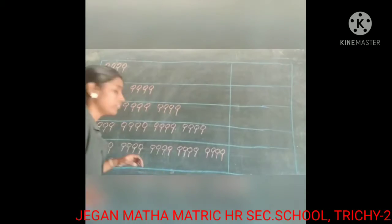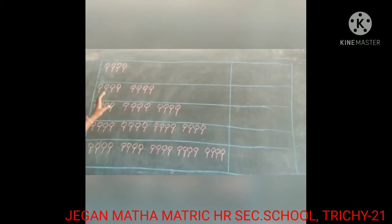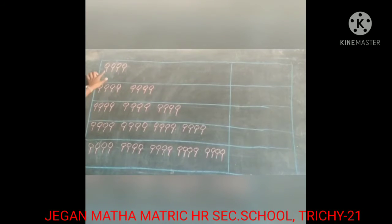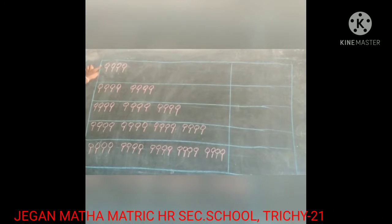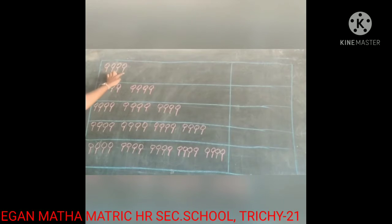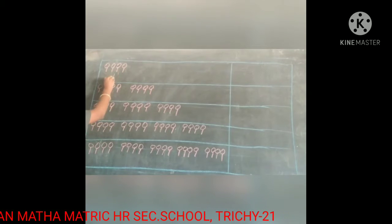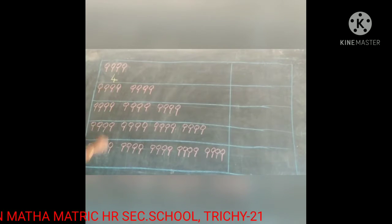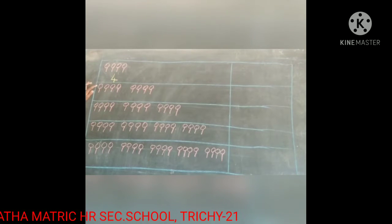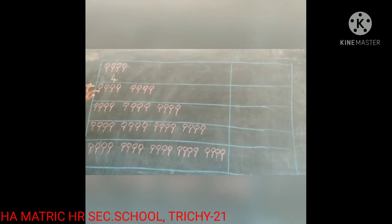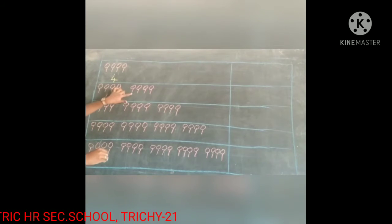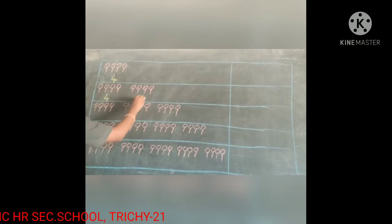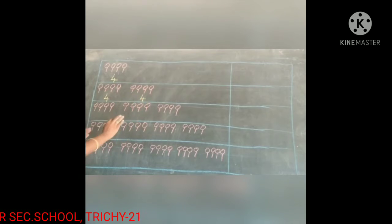Now look at the board. Here I draw some lollipops. Now look at the first box — how many lollipops are here? Count: 1, 2, 3, 4. Here we have 4 lollipops. Count the next box — how many lollipops are there? 1, 2, 3, 4. Here we have 4 and here we have 4. So in each group we have 4 lollipops.